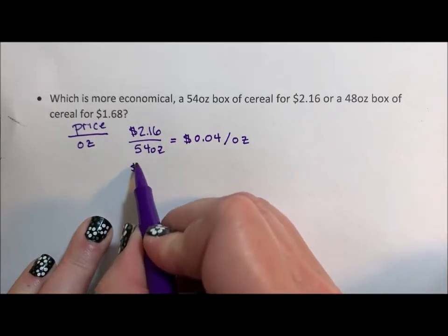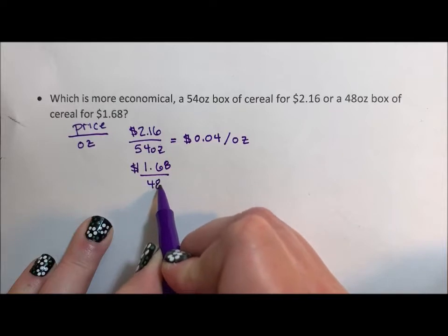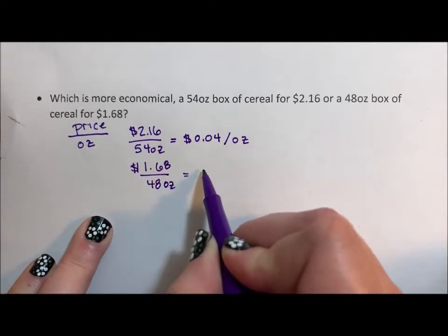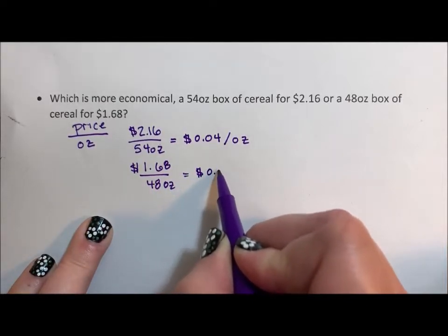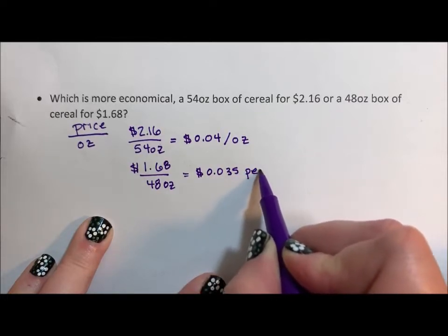If we do the other one, we have our $1.68 for 48 ounces. And when we divide this out, we get that this one is three and a half pennies, and we can use words this time, per ounce.